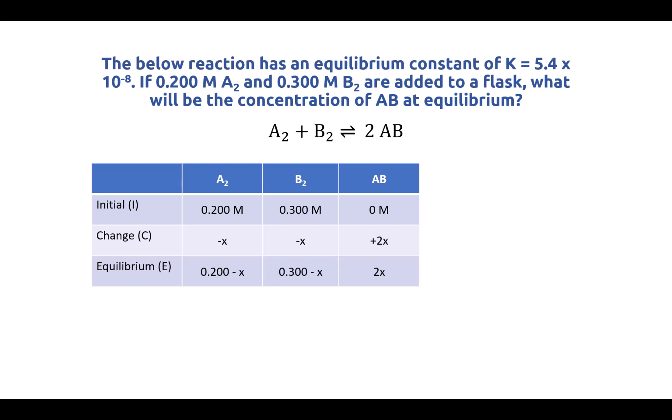Then we're going to add the first two rows together to get the equilibrium row. We end up with 0.2 minus x of A2, 0.3 minus x of B2, and 2x of the AB. Now these are not actual numerical amounts at the moment. We have some variable x in all three of them, but that's okay. We can solve for x as long as we have the equilibrium constant, and we do. The k value is given. It's 5.4 times 10 to the minus 8.